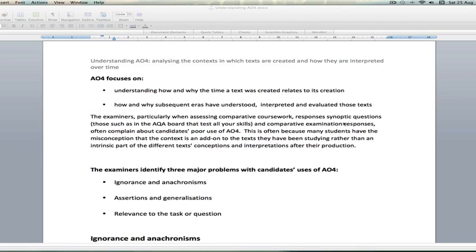AO4 has two particular areas of assessment focus. The first one is asking you to show your understanding of how and why the time or the era that the text was created in relates to its creation. So when the text was written, how did the social, political and economic circumstances surrounding the writer influence the way that they wrote that particular text. In part it has a lot to do with understanding the history of the text and when it was written.